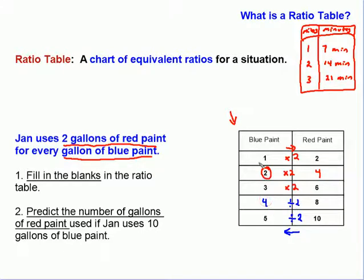And that will be our completed chart. Now, we want to predict, which means make a guess about, make a reasonable and educated guess, predict the number of gallons of red paint used if Jan uses 10 gallons of blue paint. So over here, if we were to come down our chart and we were to sit with 10 right down here, how many gallons of blue paint would we get?